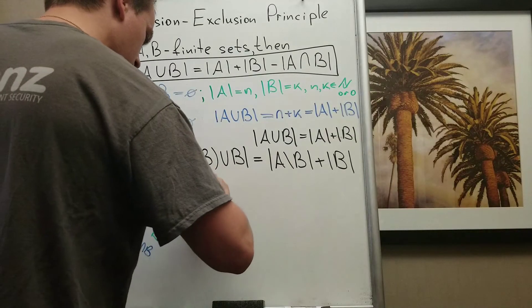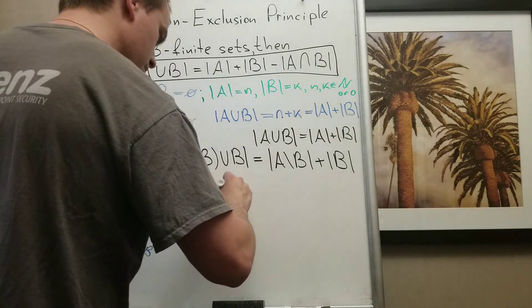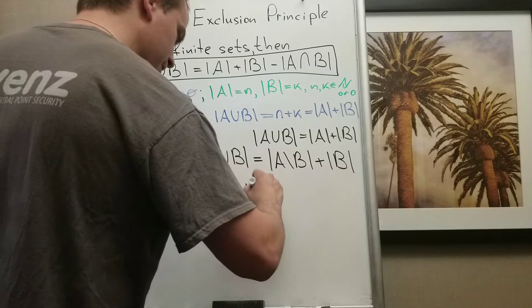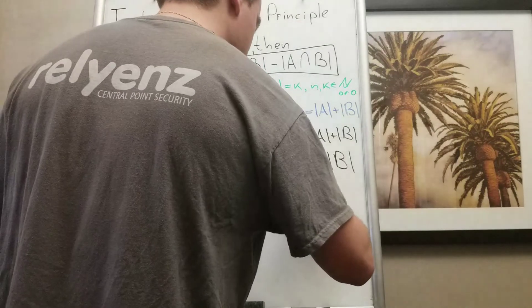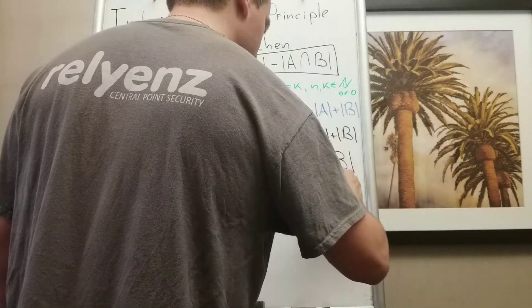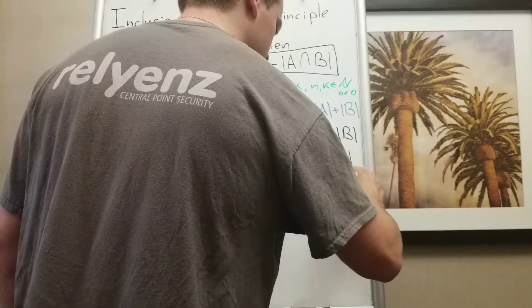So what I'm going to do, I'm going to have A minus B plus A intersection B. And since I add this number, I'm going to subtract this number: A intersection B plus B.